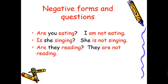Let's move on to the negative forms and questions for the present continuous. How do you put it in the negative? Same style — you just add 'not.' For example: 'Are you eating?' — 'I am not eating.' 'Is she singing?' — 'She is not singing.' Because the subject is 'she,' we use 'is.' 'Are you reading?' — 'They are not reading.' You just add 'not' after the auxiliary verb 'is' or 'are.'